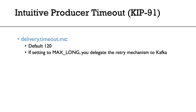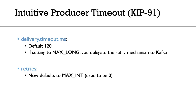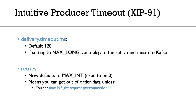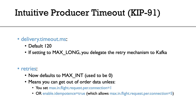If you set `delivery.timeout.ms` to max long you can wait indefinitely and delegate retry logic to the Kafka client. Speaking of retries, the default is now max int — it used to be zero. This is a tricky change because you can get out-of-order data if sends get retried, unless you either set `max.in.flight.requests.per.connection=1`, or enable `enable.idempotence=true`, which through some magic allows up to five in-flight requests with no out-of-order data.